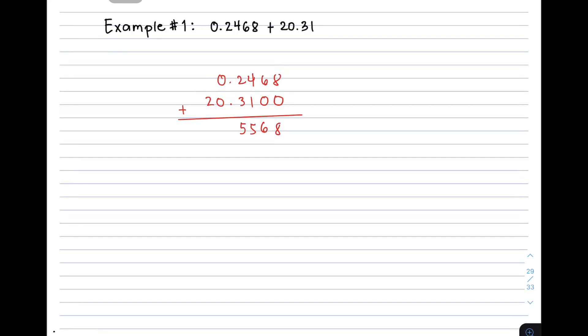2 plus 3 is also 5. And then, kung saan nakatapat yung ating decimal point, dun nyo yun ilagay yung decimal point ng sagot nyo. Then 0 plus 0 is 0. And then, bring down 2. So the correct answer for item number 1 is 20.5568. That is the correct answer for number 1.